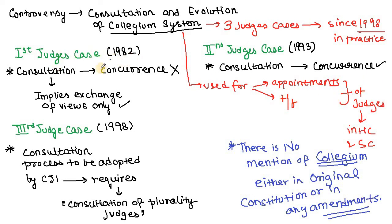The first judges case came in 1982, where the Supreme Court held that 'consultation' does not mean 'concurrence' — it means only an exchange of views. Then came the second judges case in 1993, where the court reversed its earlier ruling and changed the meaning of 'consultation' to 'concurrence' — meaning both parties have to agree.